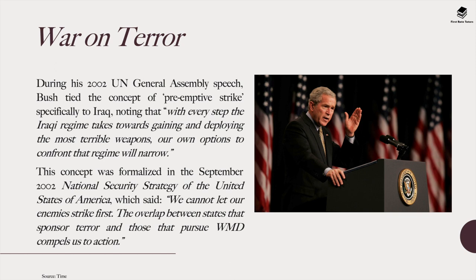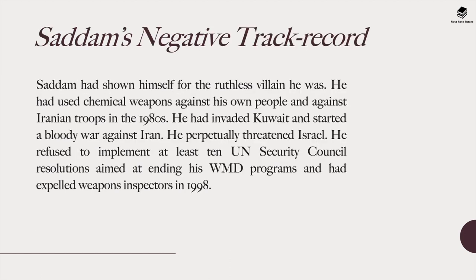Another reason was the war on terror pledged after the September 11 bombings. During his 2002 UN General Assembly speech, President Bush tied the concept of pre-emptive strike specifically to Iraq, noting that with every step the Iraqi regime takes towards gaining and deploying the most terrible weapons, options to confront that regime narrow. This concept was formalized in the September 2002 National Security Strategy, which said: 'We cannot let our enemy strike first. The overlap between states that sponsor terror and those that pursue weapons of mass destruction compels us to action.'